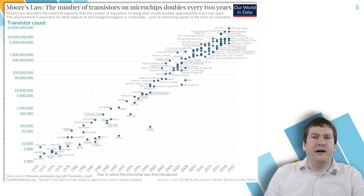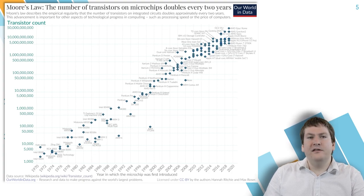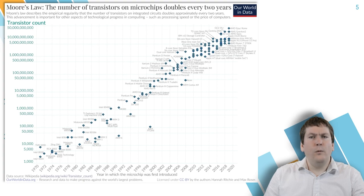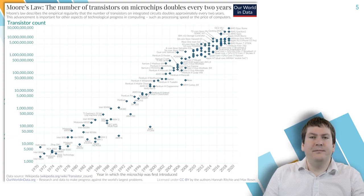So what do transistor counts have to do with computing performance, and what even is a transistor? For our purposes we can think of a transistor as a switch that the computer can turn on and off, sort of like a light switch. These switches are used by the computer for two important tasks: processing and storage. Transistors can form logic gates which make simple boolean decisions — true/false type logic, similar to if statements in programming or Excel. When we combine many logic gates we get more complex calculations such as arithmetic — addition, subtraction, multiplication, and so on. Modern CPUs have billions of transistors, allowing the computer to perform all kinds of calculations and process data.